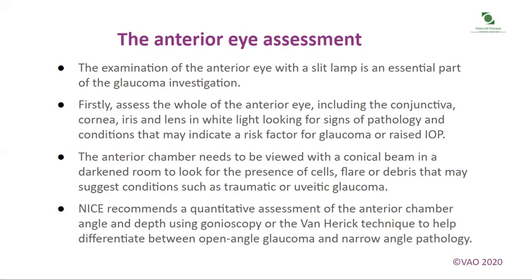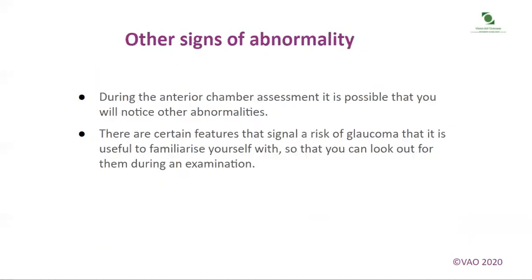NICE recommends a quantitative assessment of the anterior chamber angle and depth using gonioscopy or the Van Herrick technique to help differentiate between open-angle glaucoma and narrow-angle pathology. During the anterior chamber assessment, it is possible that you will notice other abnormalities. There are certain features that signal a risk of glaucoma that it is useful to familiarise yourself with, so that you can look out for them during an examination.